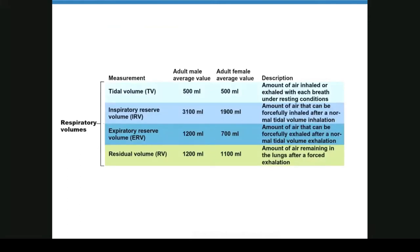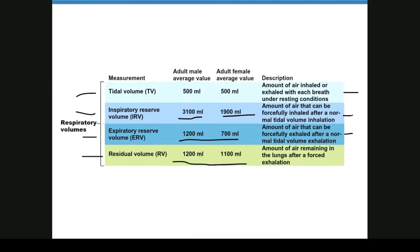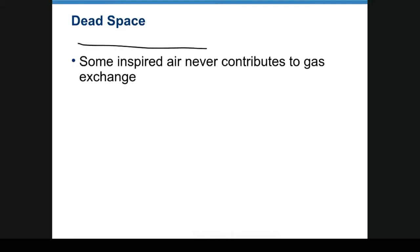Respiratory volumes: tidal volume is about 500 mL for both male and female — the amount of air inhaled or exhaled with each breath under resting conditions. Inspiratory reserve volume — males have a much higher volume than females — is the air that can be forcefully inhaled after a normal tidal inhalation. Expiratory reserve volume is the air that can be forcefully exhaled after normal tidal exhalation. Residual volume is what remains; you never get rid of all the air after forced exhalation. There's always dead space that never contributes to gas exchange.